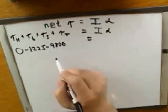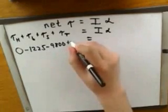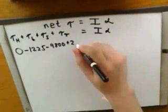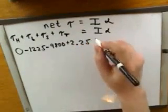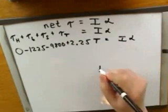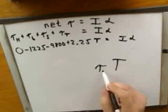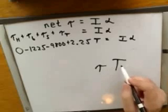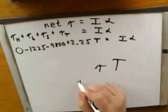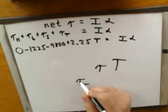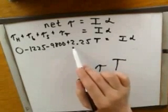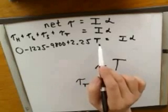It's crucial to put in the correct signs. The torque from the tension we decided was plus 2.25 times the tension force. Make sure you're using good notation — we're using a tau symbol for torque and a capital T for tension. So the torque from the tension force is plus 2.25 times the magnitude of the tension force.